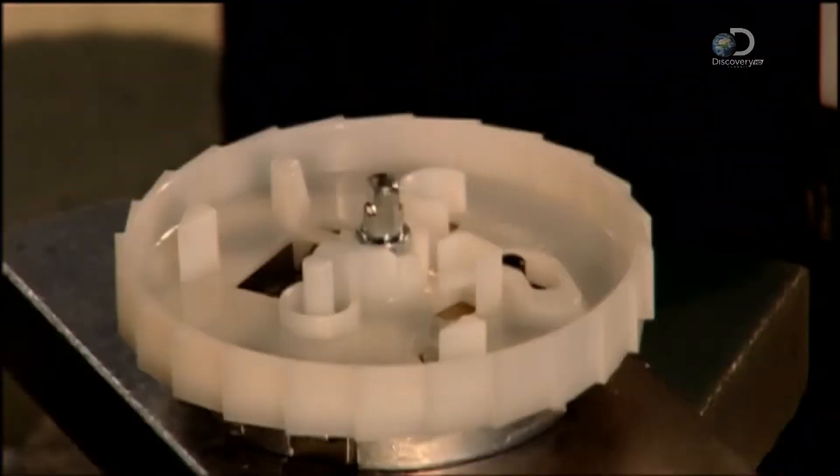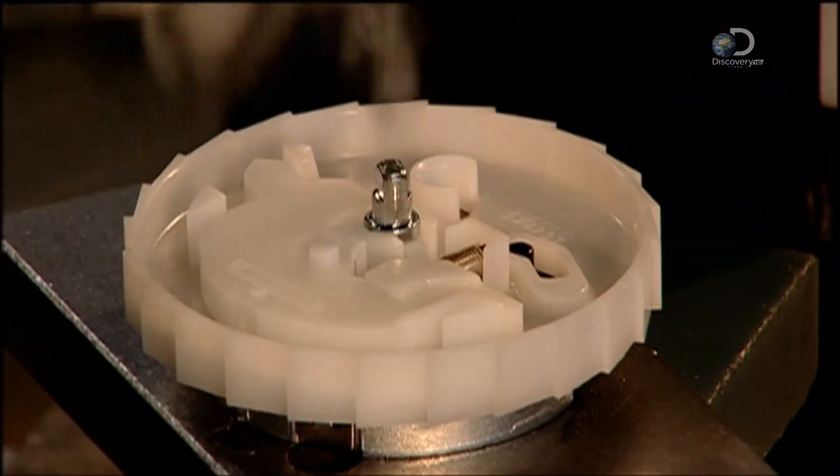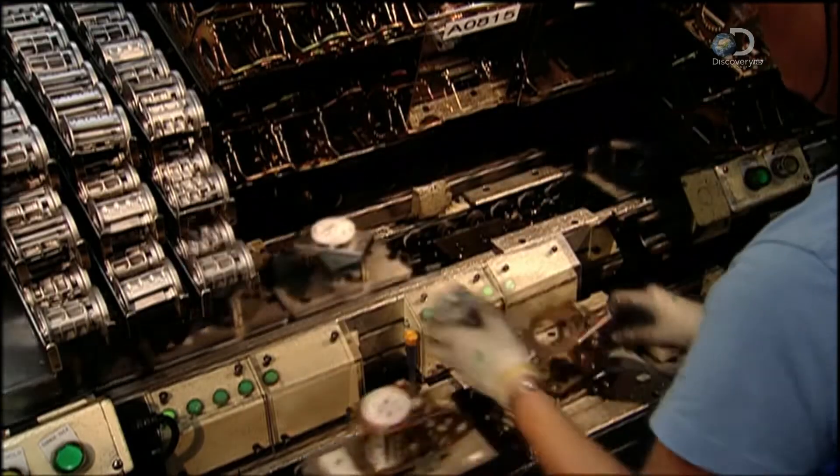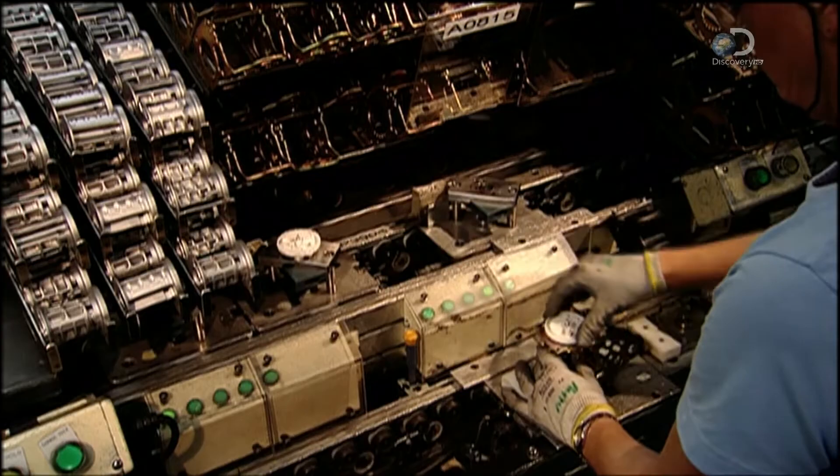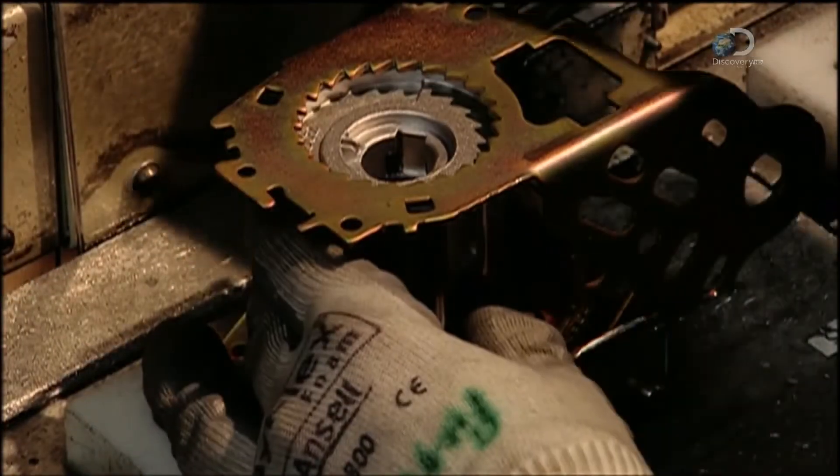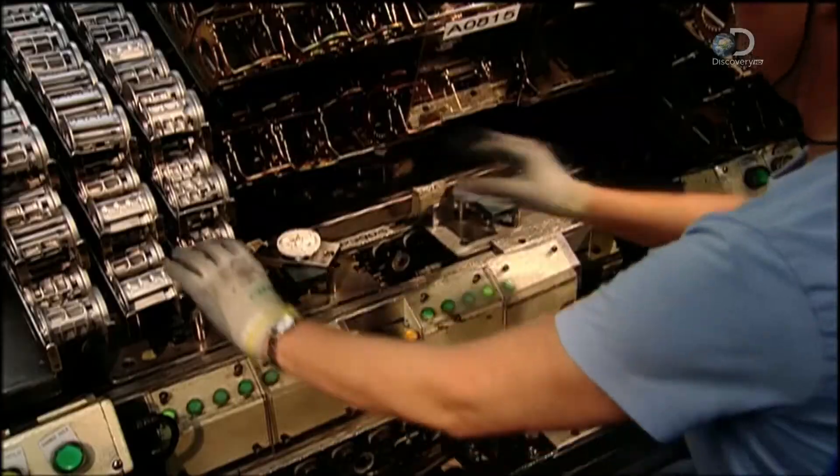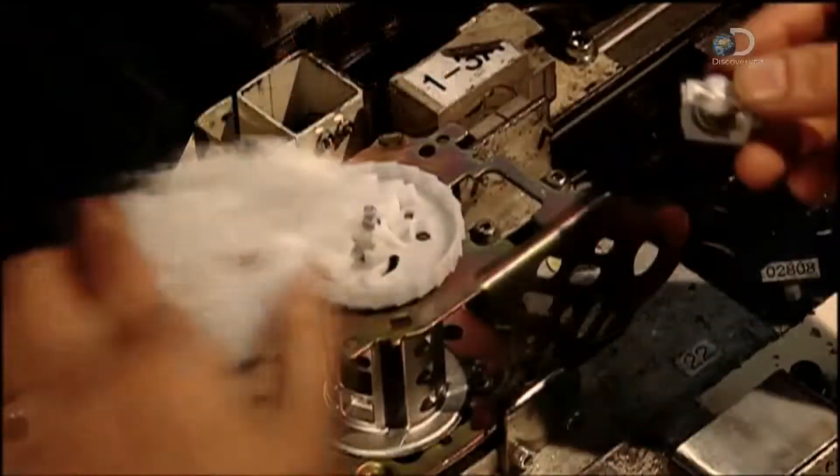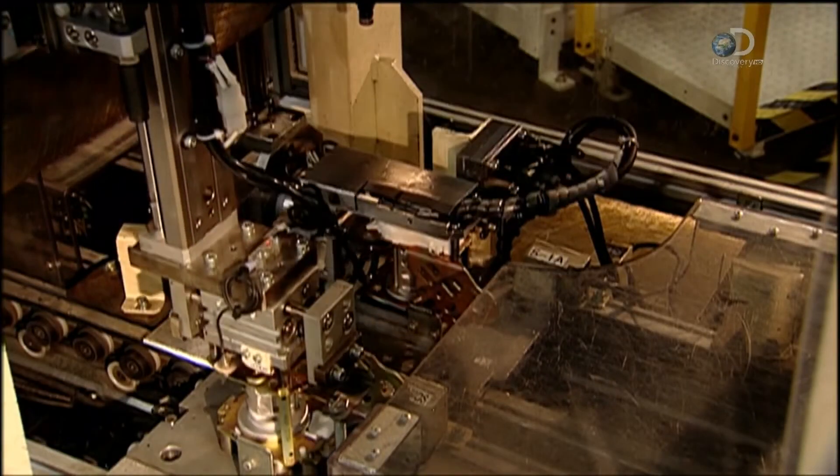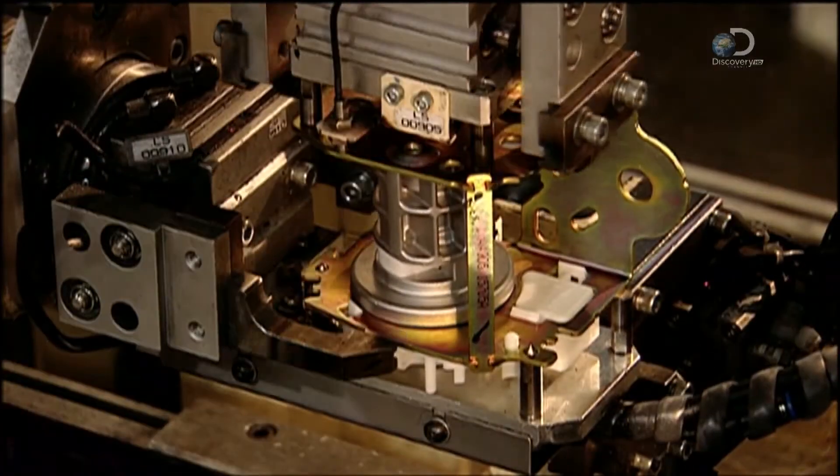The locking mechanism goes into the seatbelt's retractor mechanism, the component that lets the webbing extend and retract. The webbing will wind onto this aluminum spool in the retractor, a rewind spring keeping it taut. Sudden deceleration will cause this silver ball to trigger the locking mechanism. This will stop the spool from rotating and lock the webbing.